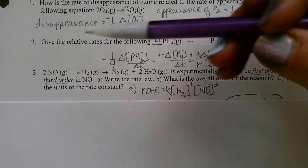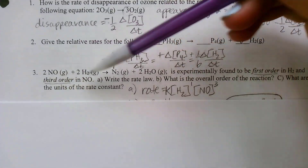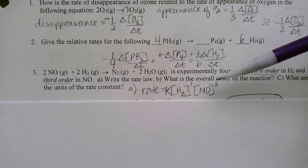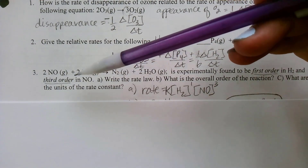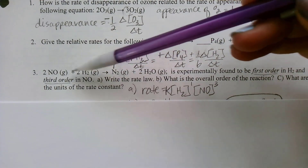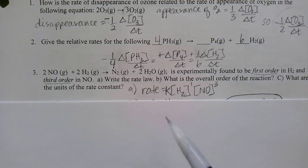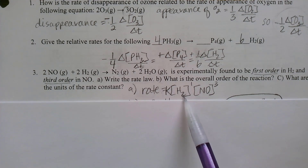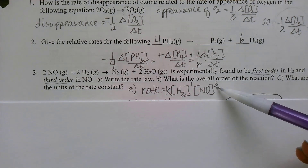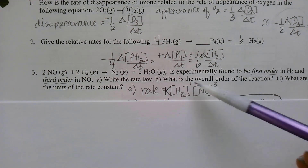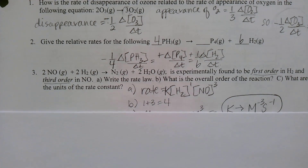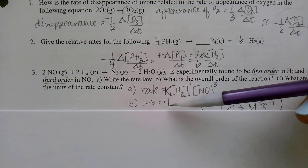Let's look at number 3. We're given a reaction that is experimentally found to be 1st order in H₂ and 3rd order in NO. To write the rate law, we always write rate equals K, then in brackets H₂ to the 1st order and NO to the 3rd order. The overall order is found by adding up the exponents: 1 plus 3 is an overall order of 4.